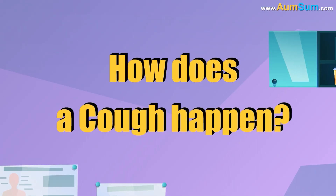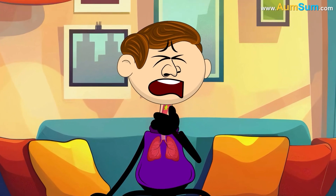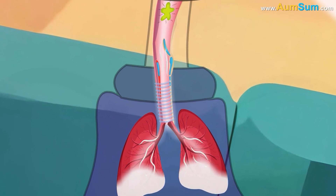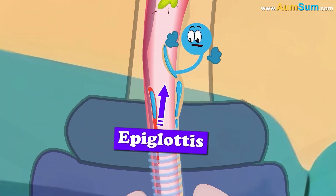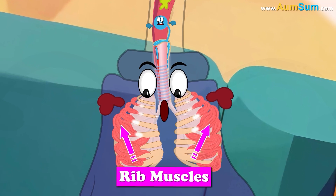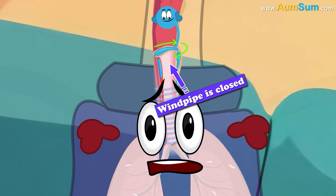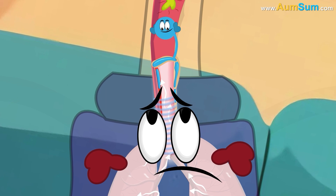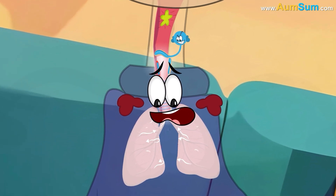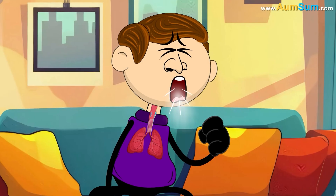How does a cough happen? When anything irritates our breathing passage, our brain activates the cough response. First, we gasp in a large volume of air into our lungs. Next, our epiglottis closes, shutting off the windpipe. Then our rib muscles begin to contract, putting pressure on the lungs — but since the windpipe is closed, the air can't move out, so more pressure builds up. Finally, the epiglottis opens and air forcefully rushes out, carrying the irritant and producing a cough.